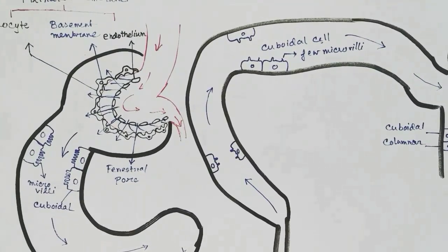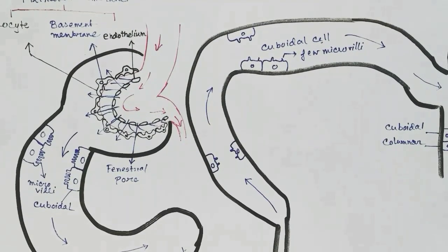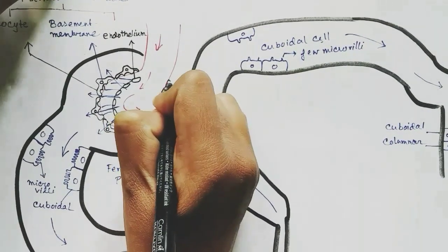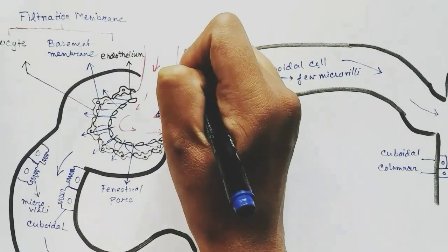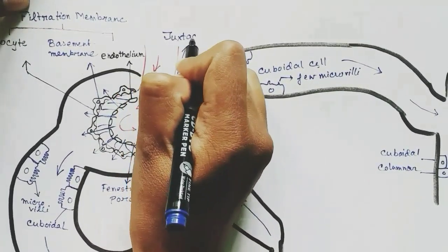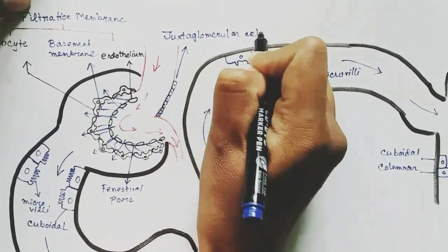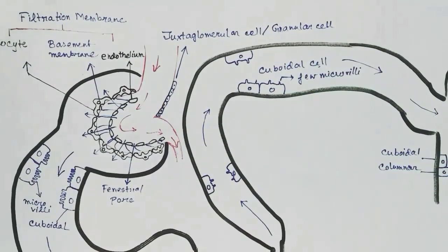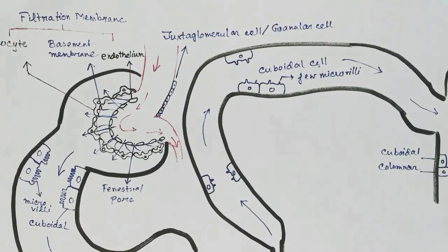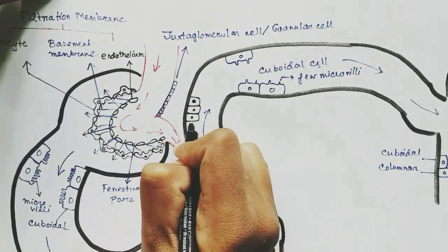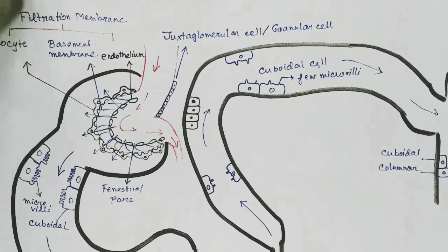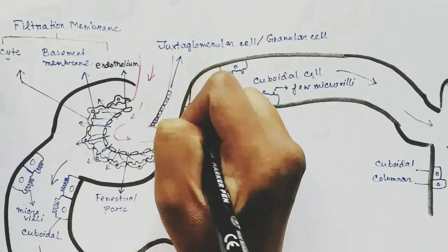Now there are some special cells present in the nephron. The afferent arteriole has special cells on it called juxtaglomerular cells, or granular cells. These cells secrete renin when blood pressure is low, and renin increases blood pressure. At the junction of the thick ascending limb of Henle's loop and the distal convoluted tubule, there are specialized cells called macula densa cells.